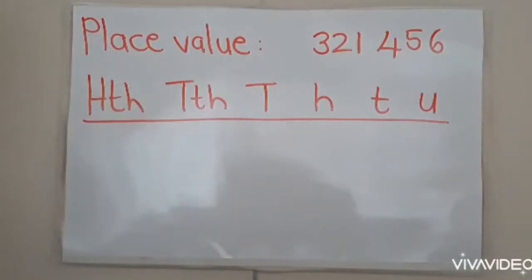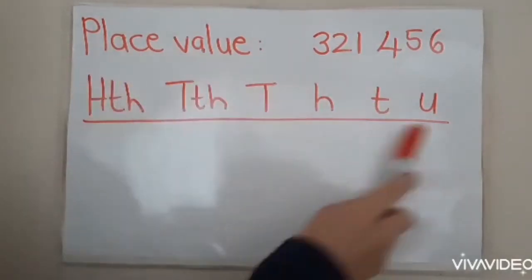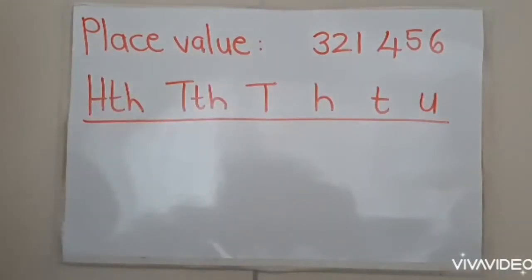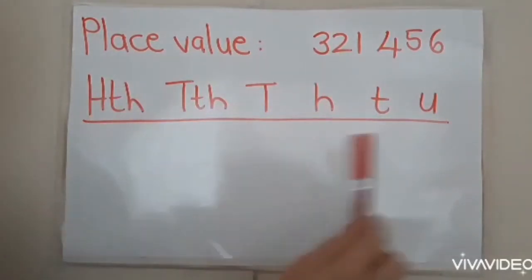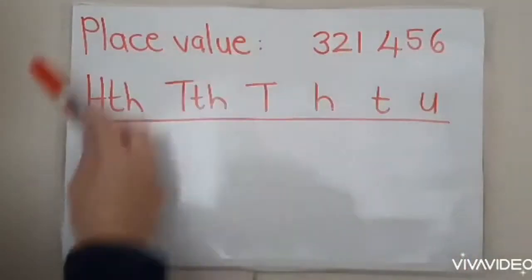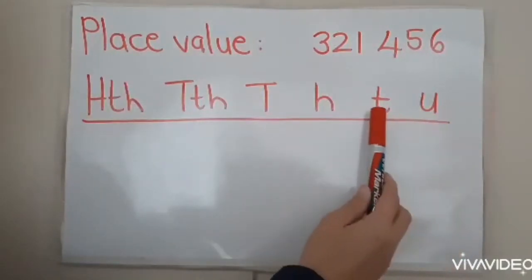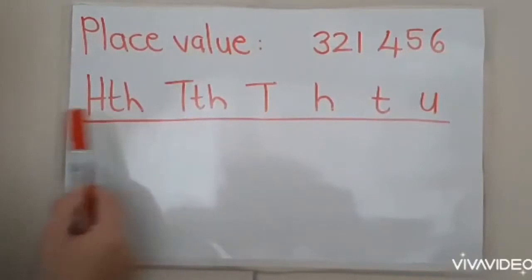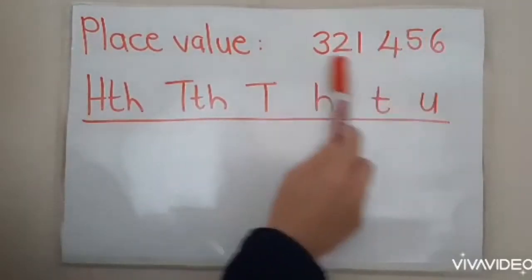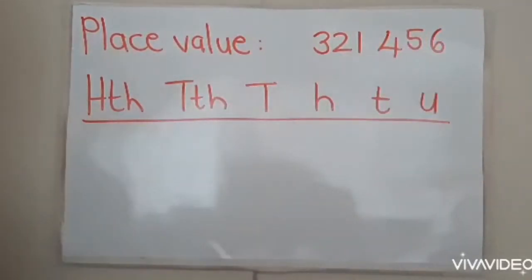We need to go and put it under the correct place value. Now it's always important to use the place value table. Write it down for yourself from the right hand side to the left hand side: units, tens, hundreds, thousands, ten thousands, and hundred thousands.